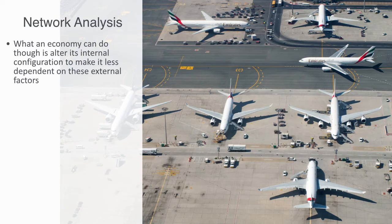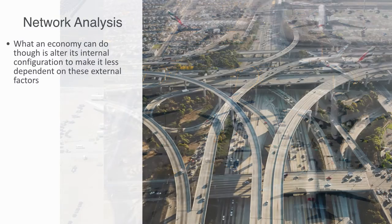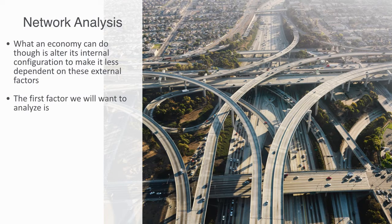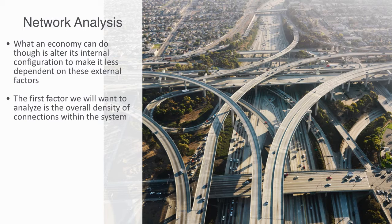Internal to the economy, we need to consider both the structure of the network of interrelations and the properties of the components within the system. The structure of the interconnections and interdependencies can be modeled through network theory. The first factor we'll want to analyze is the overall density of connections. At a low level of link density, shocks will propagate slowly. Cause and effect will have a more linear proportionality.